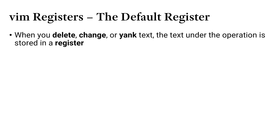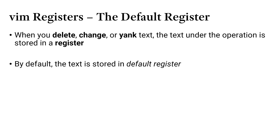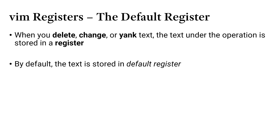Whenever you change, delete, or yank text in Vim — the text that was under the operation, so if you said change to the end of a line or delete the next word — that text gets stored in a register. By default, there's a default register that your text is stored in, and once it's there, you can paste what you just deleted, changed, or yanked by pressing the P key to paste after the cursor or Shift-P to paste before the cursor.